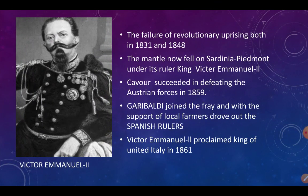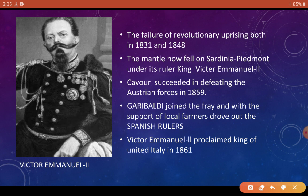Here is Victor Emanuel II, who was the king of Sardinia-Piedmont. After the failed revolutions of 1831 and 1848, the responsibility to unify Italy came upon Victor Emanuel II. And Victor Emanuel II gave this command to his chief minister Cavour.